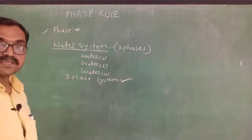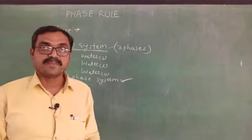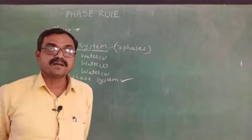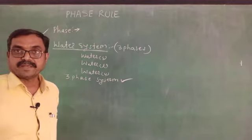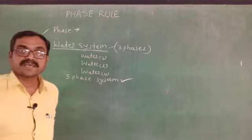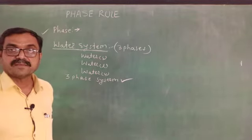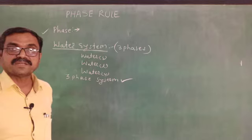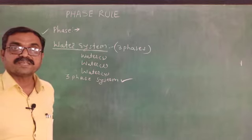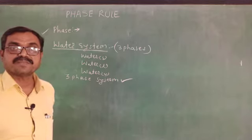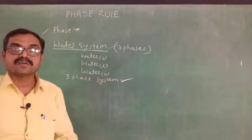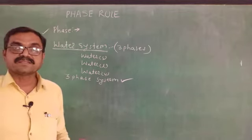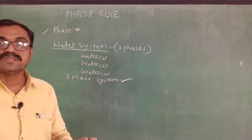In the water system there are three parts: water as solid, water as liquid, and water as vapor. These three parts are mechanically separable and physically distinct. That is why this water system is a three-phase system. Phase can be defined as mechanically separable and physically distinct homogeneous part of a system. If in any system there are more than one phases, such a system is a heterogeneous system.